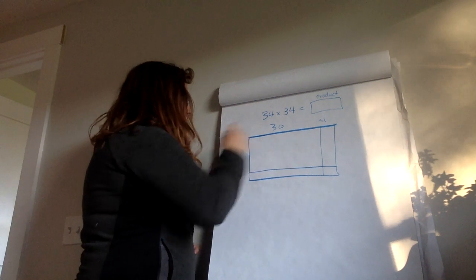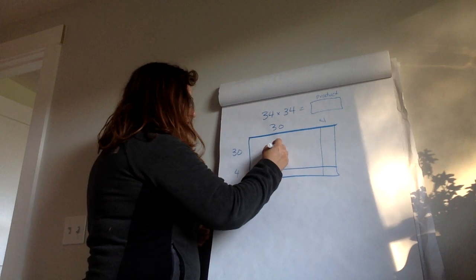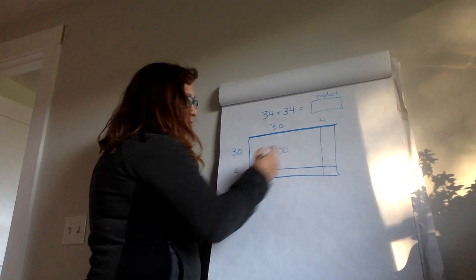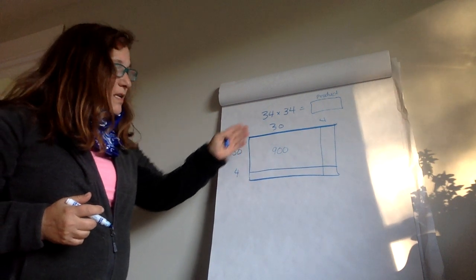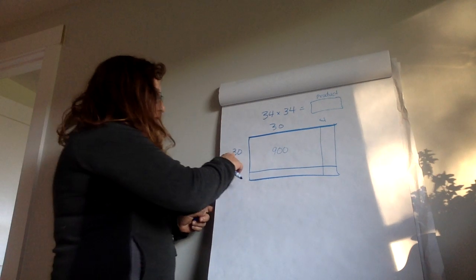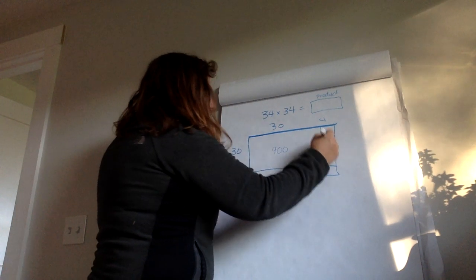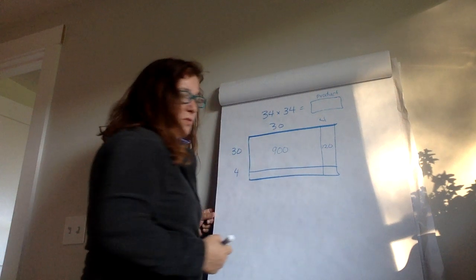So 30 times 30. The easy way to do that would be 3 times 3 is 9. And I would add my two zeros because I'm not doing 3 times 3, I'm doing 30 times 30. 30 times 4 would be 3 times 4 is 12. Add my 0 is 120.